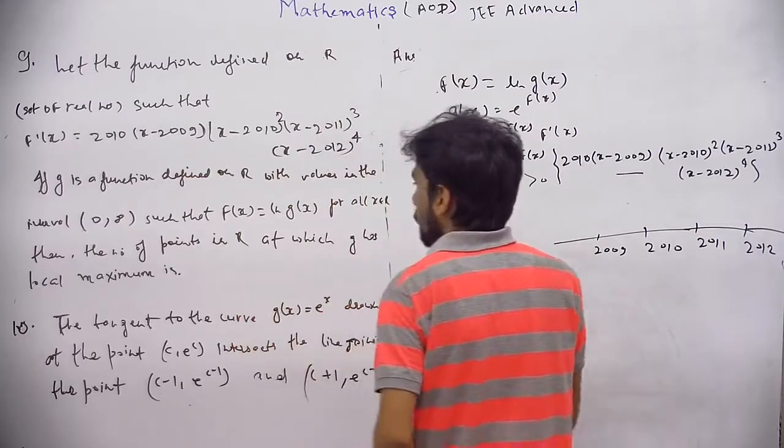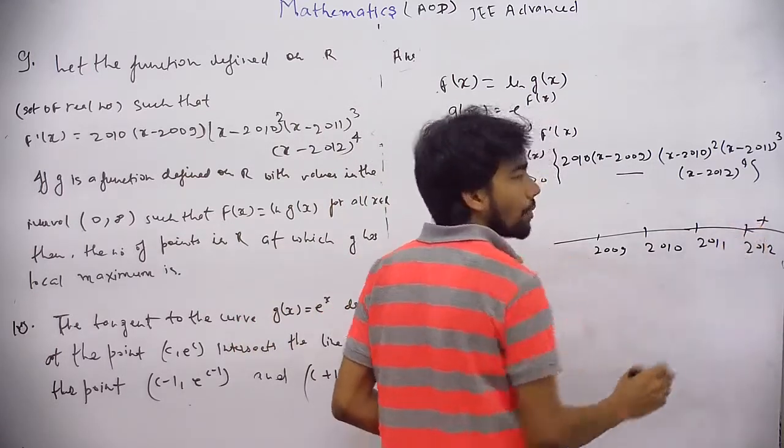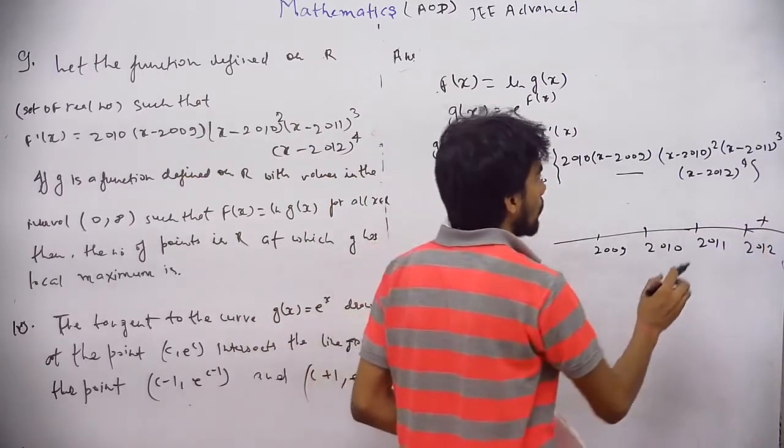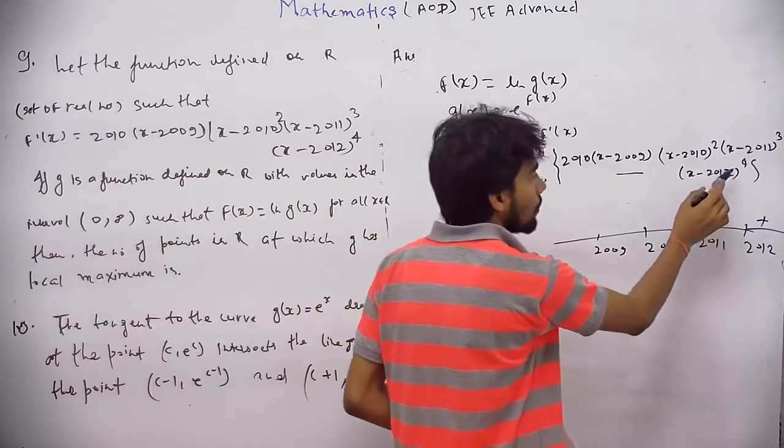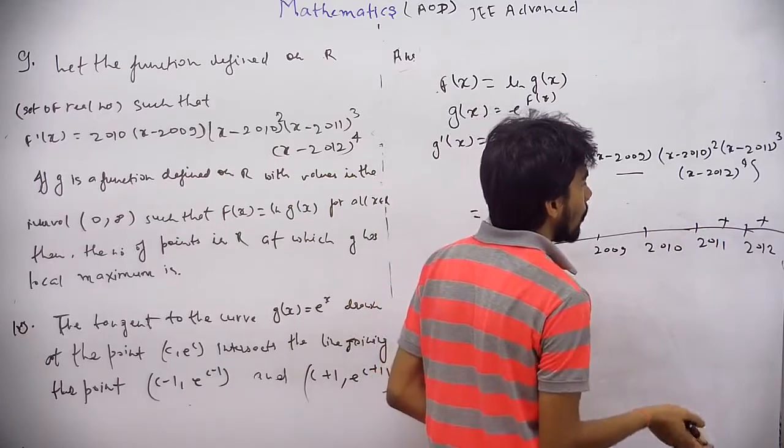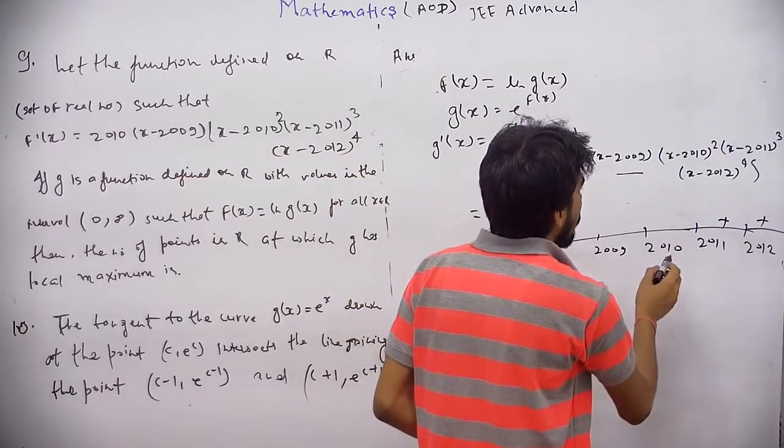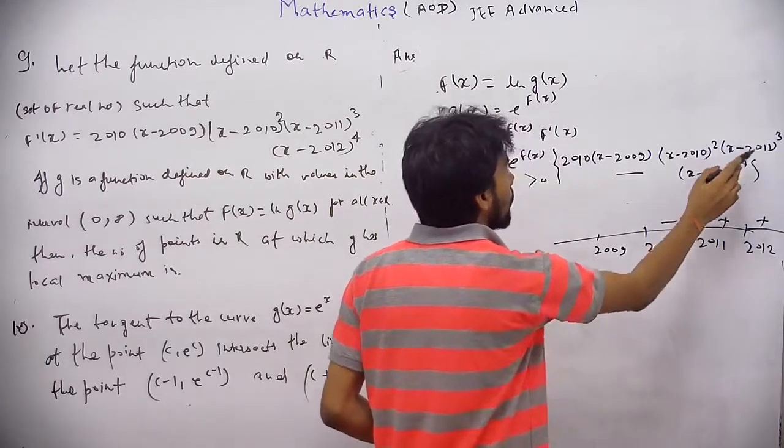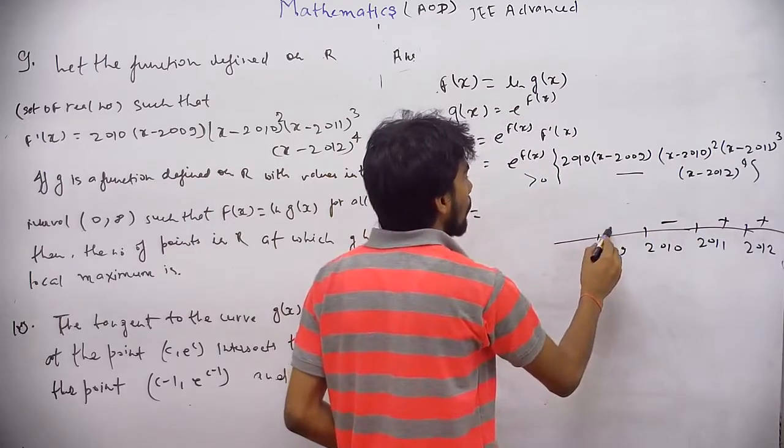And we have to find the point of local maximum. So it will be always positive and the sign will not change here because the power is even. So it will also be positive here. And here it will change power. And it will not change here.